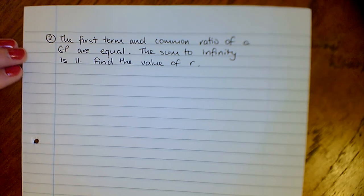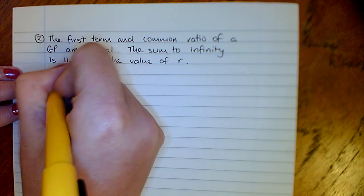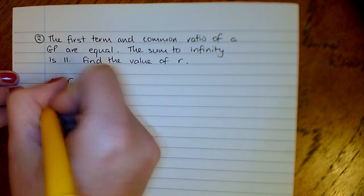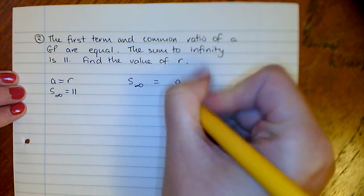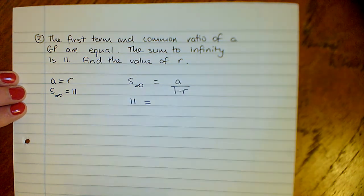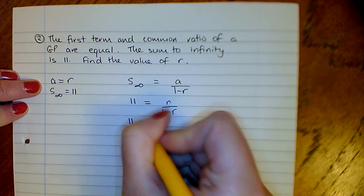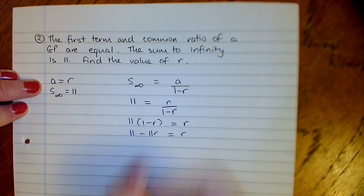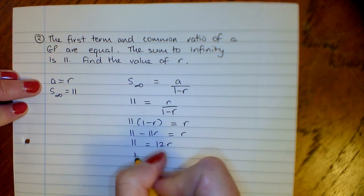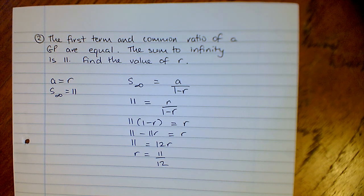Our second one then, the first term and the common ratio of a GP are equal. The sum to infinity is 11. Find the value of R. Our first term and our ratio are equal, and sum to infinity is 11. Our formula for sum to infinity is A over (1 minus R), so that's 11. A is R, so we can write that as R over (1 minus R). Bring across the denominator, multiply out your brackets, bring your minus 11R across and add it on, which gives you a value of R as 11 over 12.